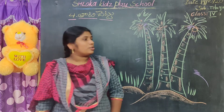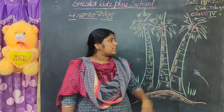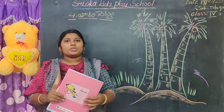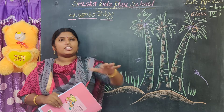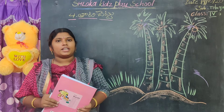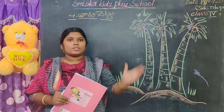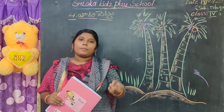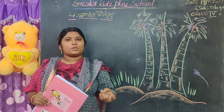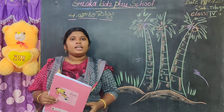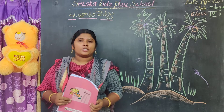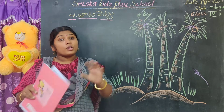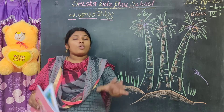Good morning children. Today we have to try 3 classes. We can try 4 sets of each set. We have to try 3 sets, 3 sets and 3 sets. So we can try 1 set.